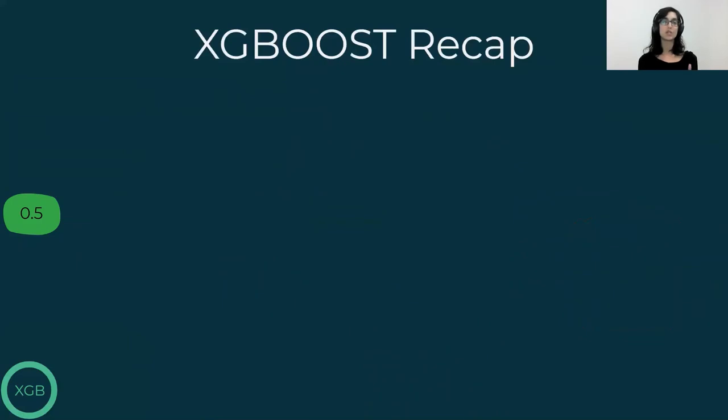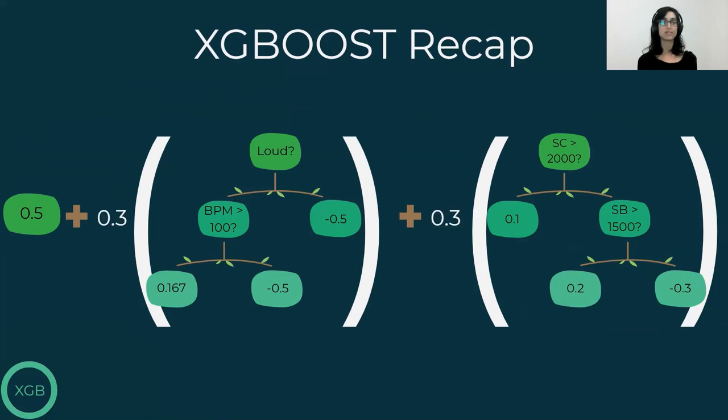So we talked about the initial prediction XGBoost gives, the trees that predict residuals, scaling the predictions by the learning rate, and pruning the trees after they are built. As you can see, XGBoost builds each tree based on the previous one, in contrary to random forest, which builds each tree independently.